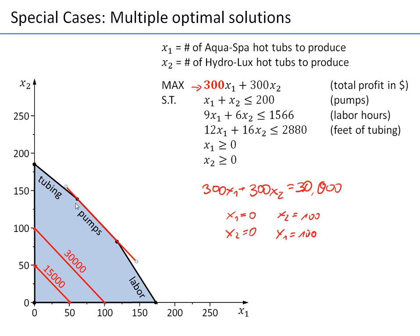That shows me that this corner point is an optimal solution, and this corner point is also an optimal solution. From previous calculations, we already know these corner points. They were (122, 78) — the point that was originally the optimal solution — and (80, 120). Originally, (80, 120) was not an optimal solution; its profit value was worse. But is that still the case now? No, it isn't — we have a different objective function.